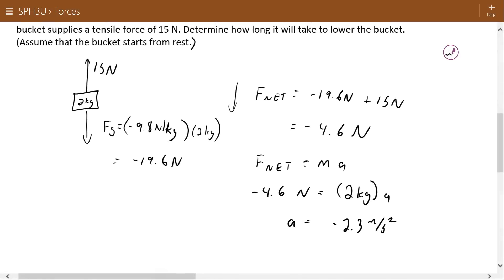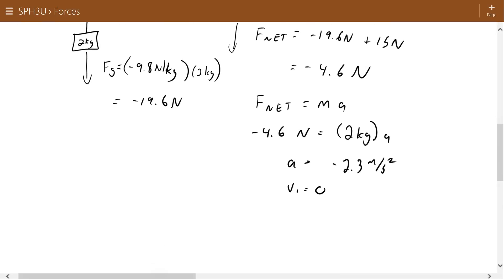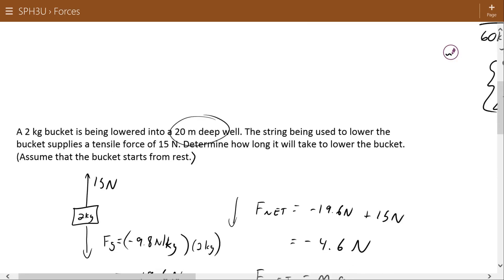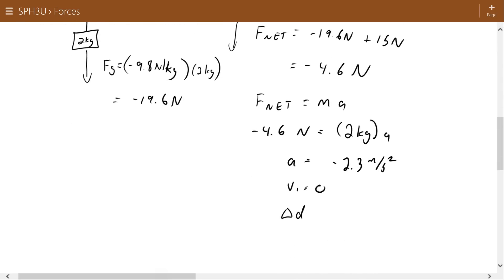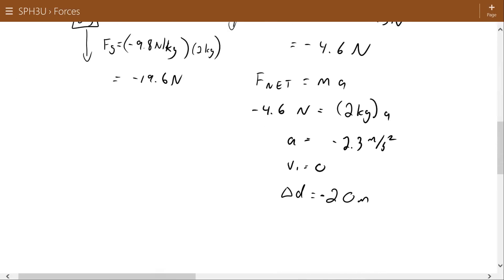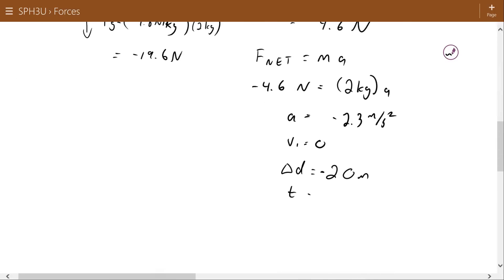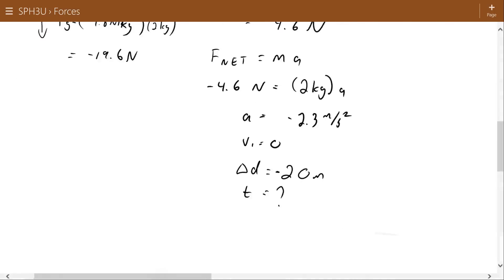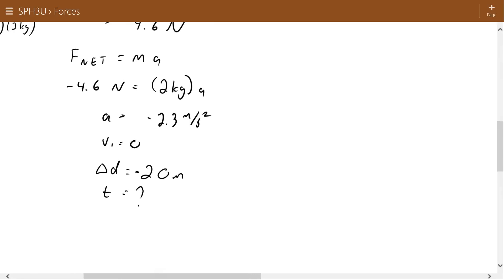We're assuming again - it says right in the question that the initial velocity is zero, and it says that the well, if we go back up to the question here, is 20 meters deep. So that means that when the bucket displaces to the bottom of the well, it will displace through a distance of negative 20 meters. So what does it want to know? How long will it take to lower the bucket? So it wants to know t again. So having the acceleration, we now have enough kinematics information to solve this problem.